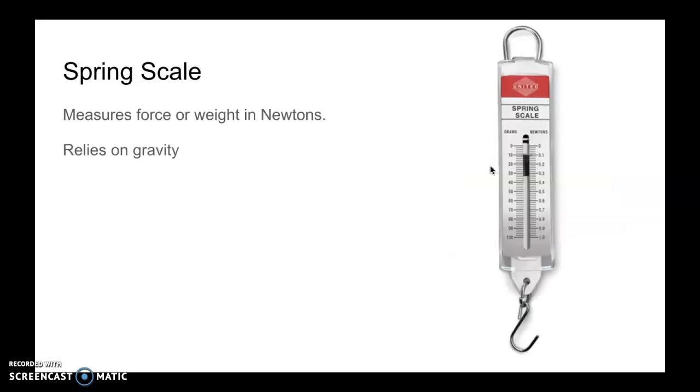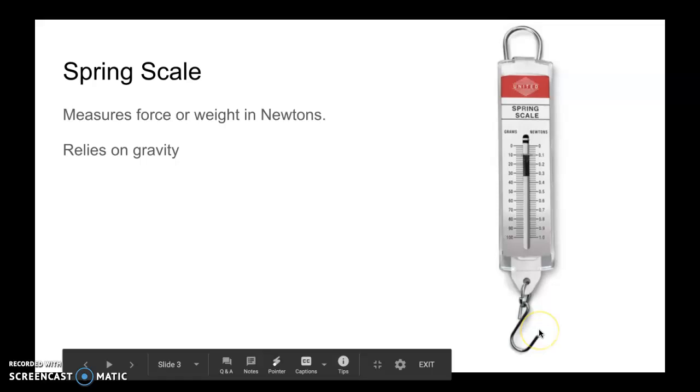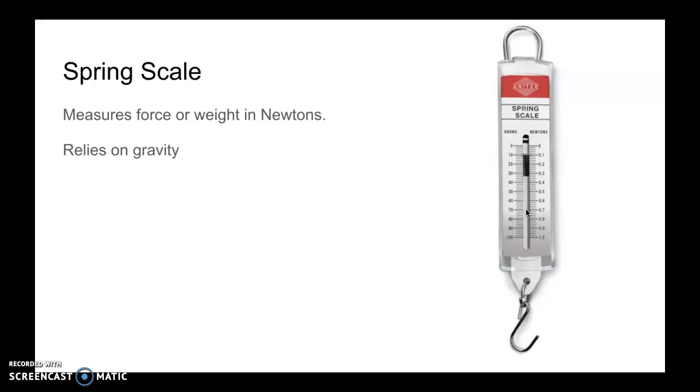This tool is called a spring scale. This is what scientists use to measure weight. The unit of measure is newtons. The way this tool works is the object you are trying to weigh is attached to this hook. The spring scale is held in your hand. The object that is hanging will respond to gravity and gravity will pull down. There's a lever up here that slides down depending upon the weight of your object.